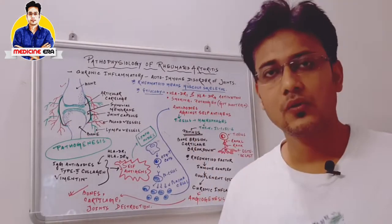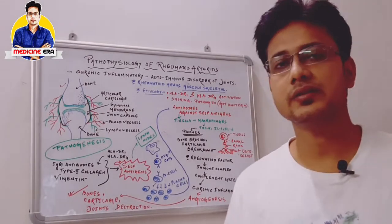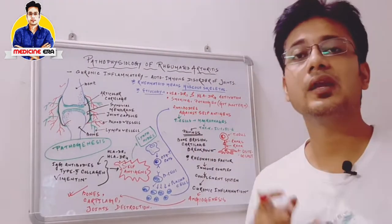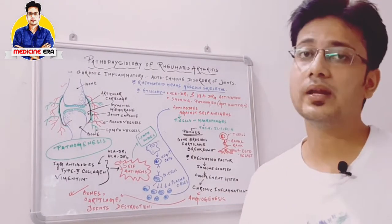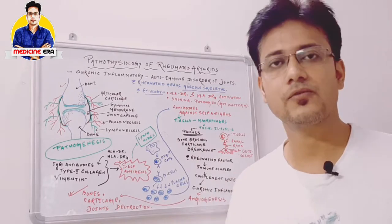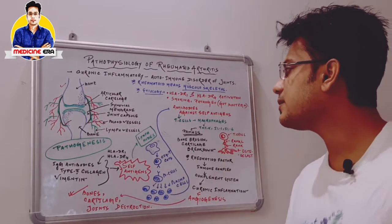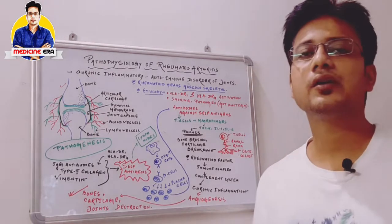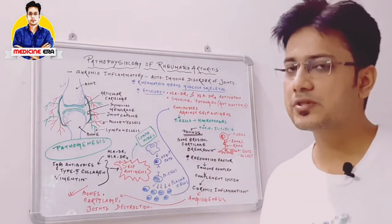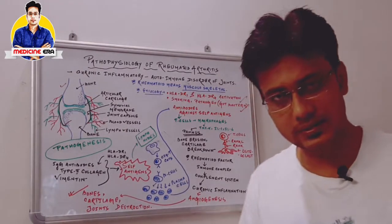Regarding etiology, according to scientists, HLA-DR1 and HLA-DR4 — Human Leukocyte Antigen DR1 and DR4 — these two gene activations are mainly responsible for rheumatoid arthritis. Additionally, smoking and pathogens, mainly gut bacteria persisting in our intestine, are also responsible for rheumatoid arthritis.